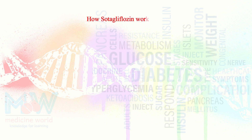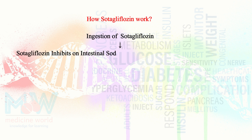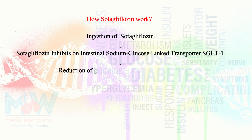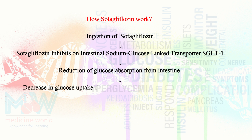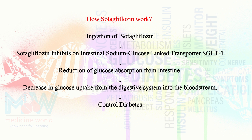Now we will discuss how it works. Upon ingestion of sodagliflozin, it inhibits the intestinal sodium glucose linked transporter SGLT1, resulting in a reduction of glucose absorption from the intestine and a decrease in glucose uptake from the digestive system into the bloodstream, thus helping to control diabetes.